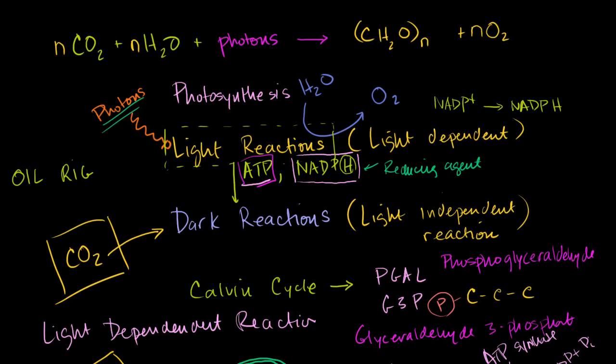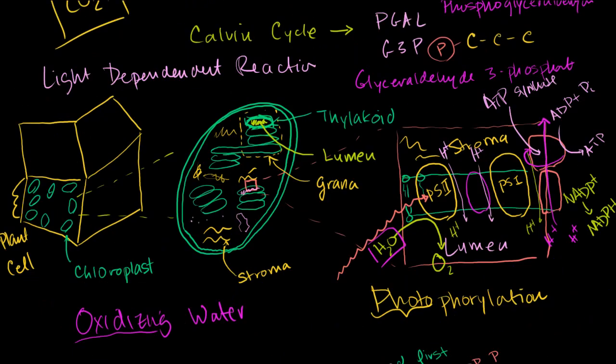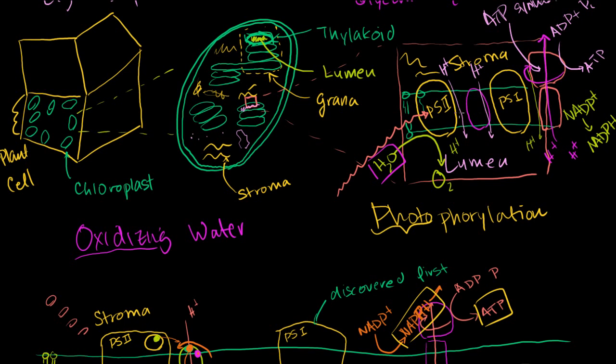I think we're now ready to learn a little bit about the dark reactions. But just to remember where we are in this whole scheme of photosynthesis, photons came in and excited electrons and chlorophyll in the light reactions. And as those photons went to lower and lower energy states, all of this was going on in the thylakoid membrane right over here. As they went into lower and lower energy states, two things happened.